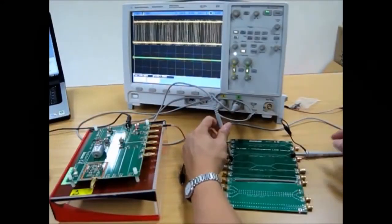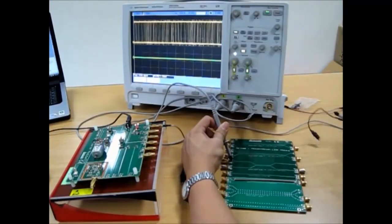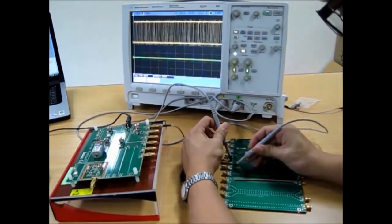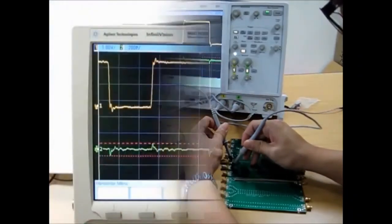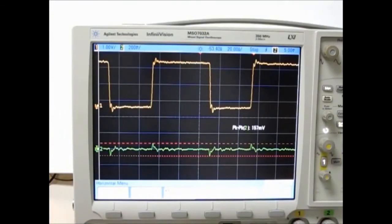Use probe 1 to capture the high speed pulse on the active trace and probe 2 on the induced near end crosstalk point. As observed on the rising edge of the pulse, the induced signal is a positive spike and on the falling edge, it is a negative spike. However, the signal is much smaller now, it is 157 mV compared to the previous 394 mV from the 100 mm coupled line.